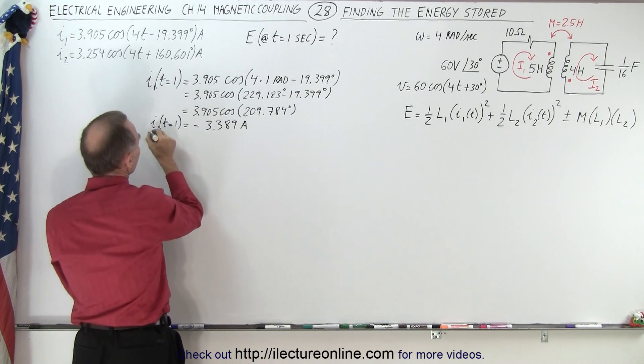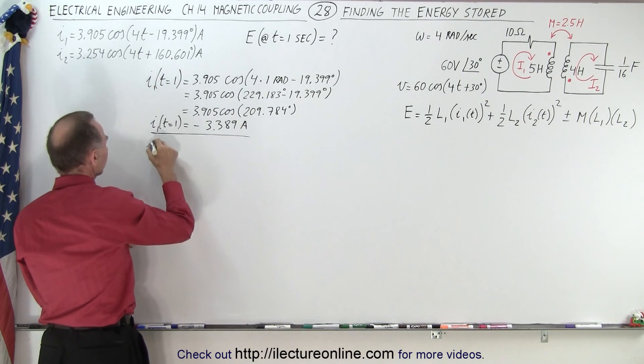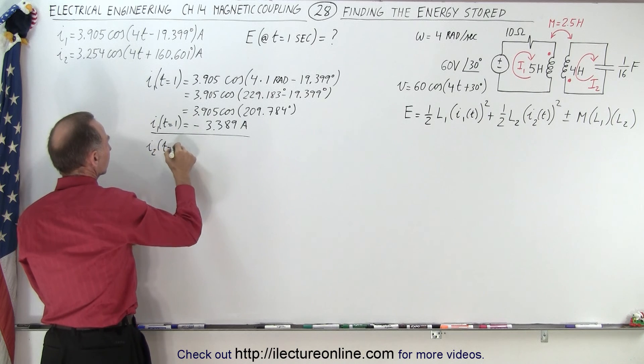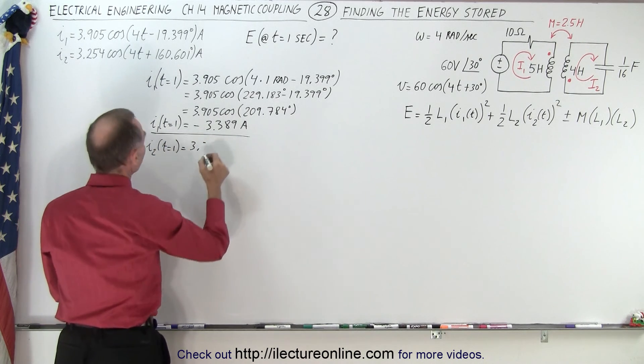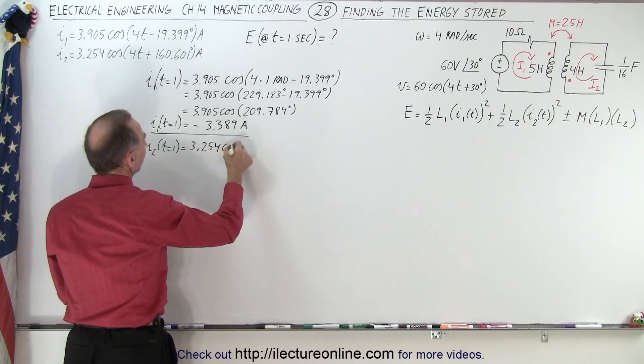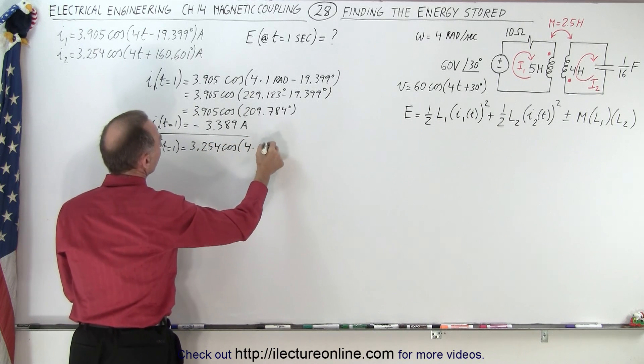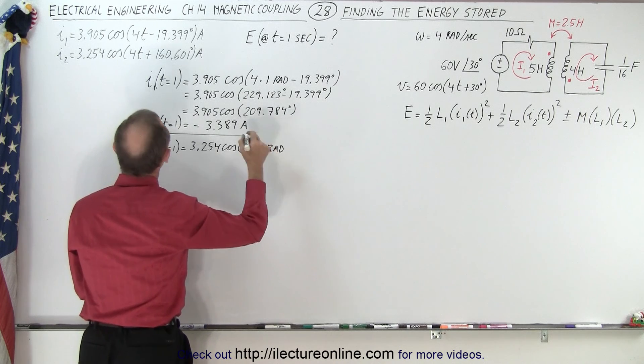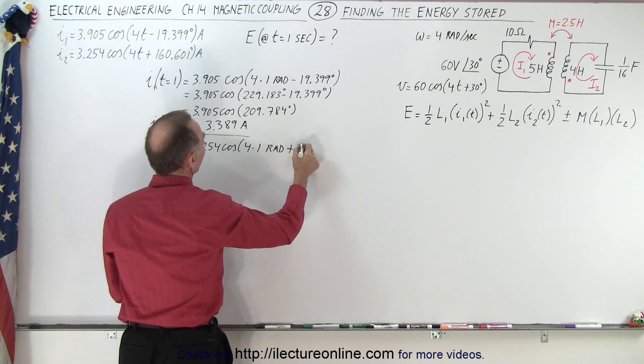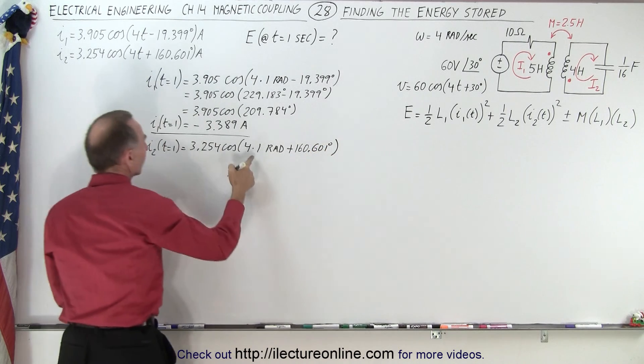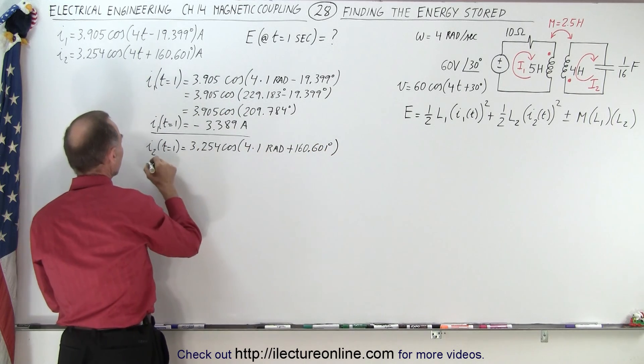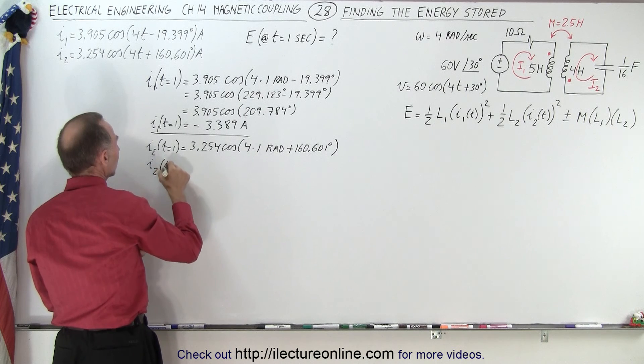How about I2? That's 3.254 times the cosine of 4 times 1 radians, and here the phase angle is plus 160.601 degrees.